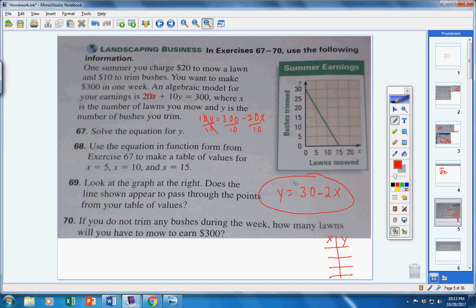10Y equals 300 minus 20X. Divide everything by 10, and I'm left with Y equals 30 minus 2X. Use this equation to make a table of values. We'll put in 5 for X, 10 for X, and 15 for X. Putting 5 in first: 2 times 5 is 10, 30 minus 10 is 20. Next 10: 2 times 10 is 20, 30 minus 20 is 10. Then 15: 2 times 15 is 30, 30 minus 30 is 0.